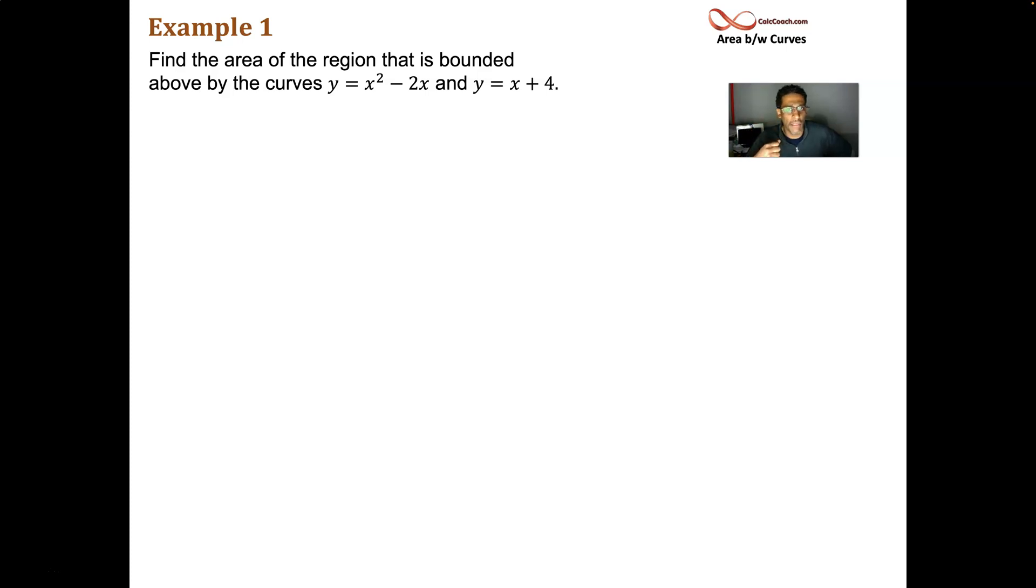What do we need to know about this parabola? It opens up. If we knew where its intercepts were, that would be great too. Set it equal to 0. And you'll find you can factor out an x and have 0 and 2 as your intercepts. That's a line that has a y-intercept of 4 and a slope of 1. And so, that's our region we're trying to find the area of.